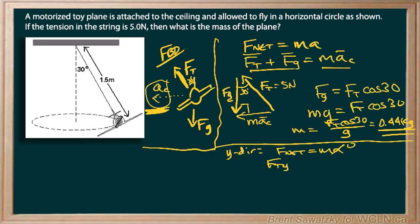So the y component of FT we could say is FT and that will be cos 30, and then we can move the MG over to the other side and now let's solve for M. M equals FT cos 30 all over G and that should look pretty familiar.